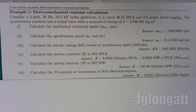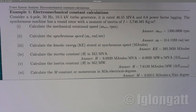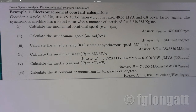There are several questions. First, calculate the mechanical rotational speed. Second, calculate the synchronous speed on the electrical side of the machine. Third, calculate the kinetic energy stored at synchronous speed. Fourth, calculate the inertia constant H. Fifth, calculate the inertia constant H again but with different units. Finally, question six asks for the M constant, or momentum, expressed in units of mega joule seconds per electrical degree.